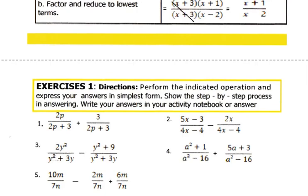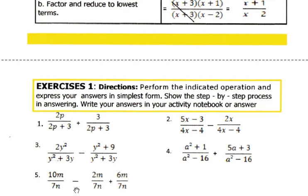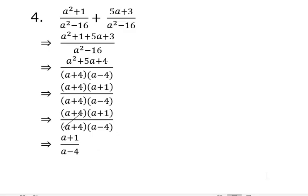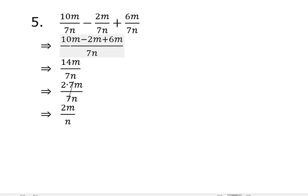For number 5, 10m over 7n minus 2m divided by 7n plus 6m all over 7n. For the solution, we have to combine them in one fraction. Just simply add or subtract 10m minus 2m plus 6m. That becomes 14m all over 7n. Factor out 14, it's 2 times 7m. Copy m, then copy the denominator. We cancel out 7 in the numerator and denominator. Final answer is 2m all over n.